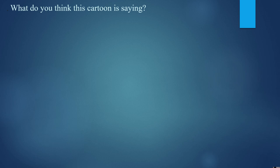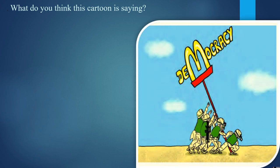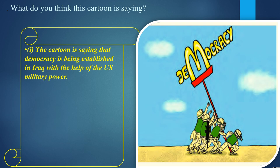Question 1: What do you think this cartoon is saying? The US and allied military forces were behind affecting democracy in Iraq. Saddam Hussein ruled Iraq as nothing less than a dictator from 1979 to 2003. In 2003, NATO forces occupied Iraq and the first multi-party elections were held in 2005. The cartoon is saying that democracy is being established in Iraq with the help of US military forces.